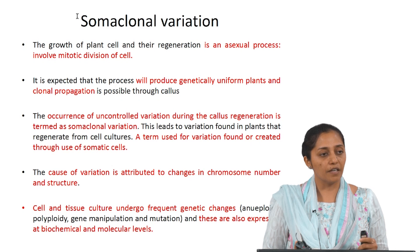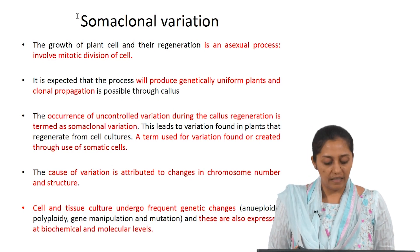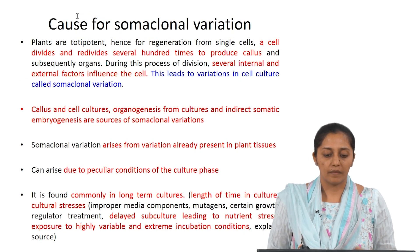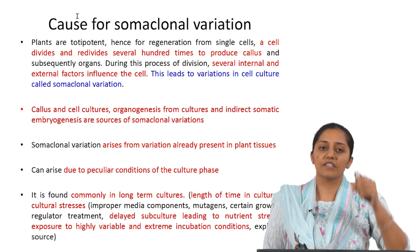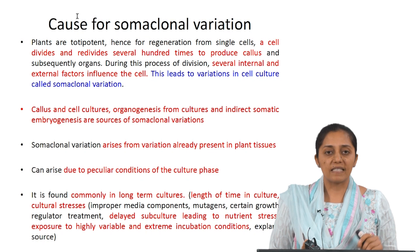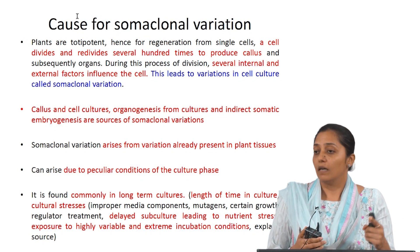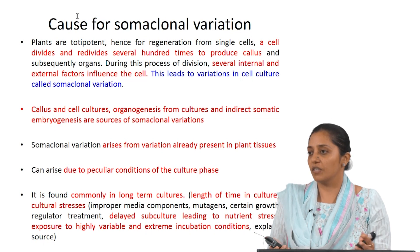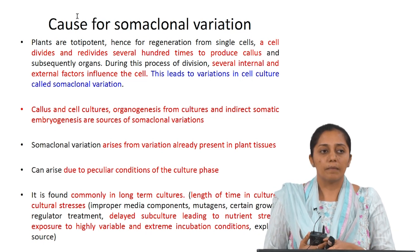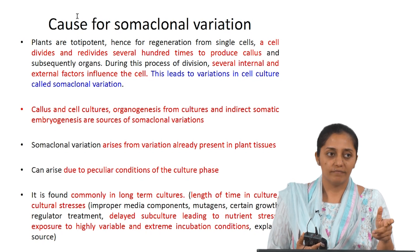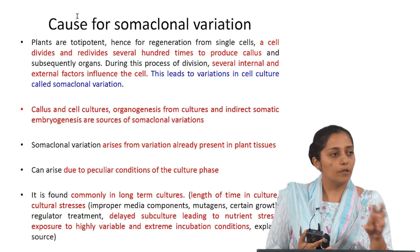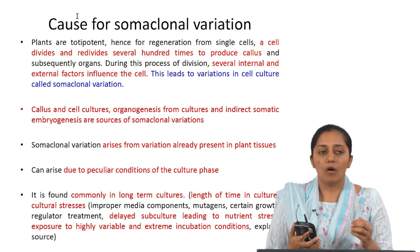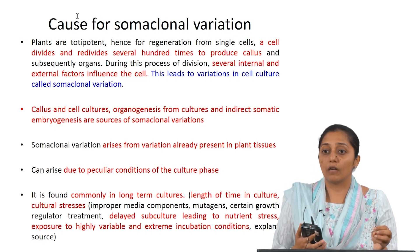Cell and tissue cultures undergo frequent genetic changes and these get expressed in the form of biochemical and molecular level changes. What causes somaclonal variations? Plants are totipotent, and every cell needs to divide a number of times before de-differentiation and then redifferentiation happens. Because of this, sometimes there is a ploidy change. Sometimes you will find karyotypic alterations, meaning recombinations happening or activation of transposon elements.